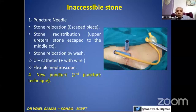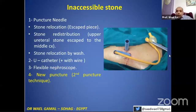If the stone is inaccessible and everything has failed to relocate or extract it, you can do a second puncture. However, for the first access, you need to put a Foley catheter, inflate the balloon inside, close the Foley catheter, and then opacify the pelvicalyceal system. Otherwise, the dye will escape through this track.